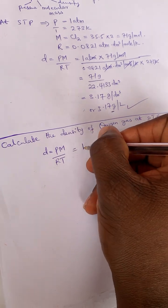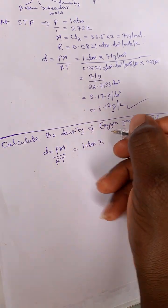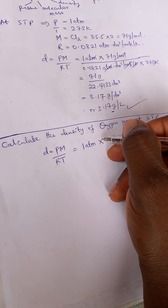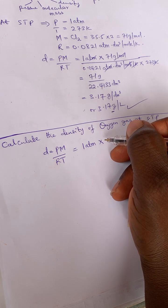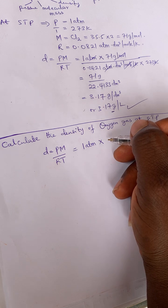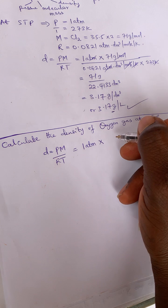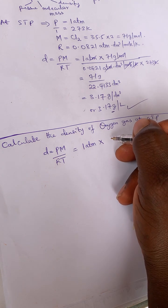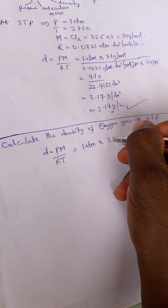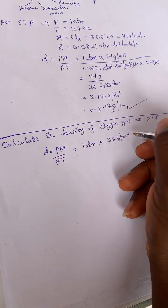So this will also be equal to 1 atm times the molecular mass of oxygen. Each oxygen atom weighs 16 grams, so for the two atoms making up the molecule, we have 32 grams per mole.